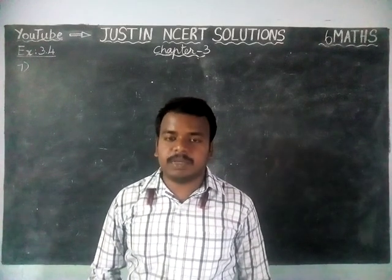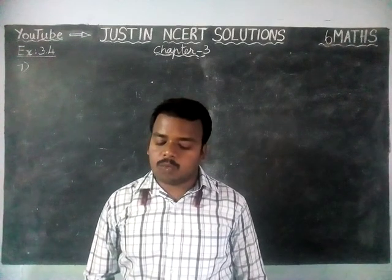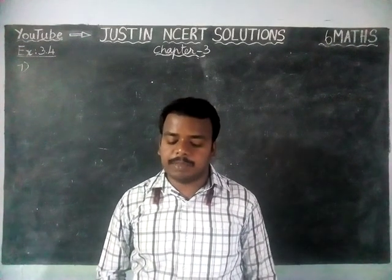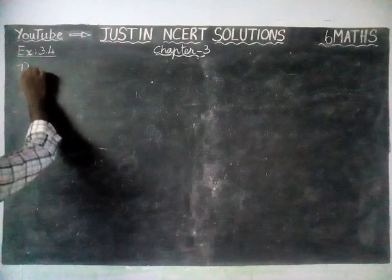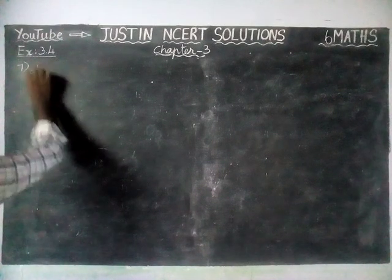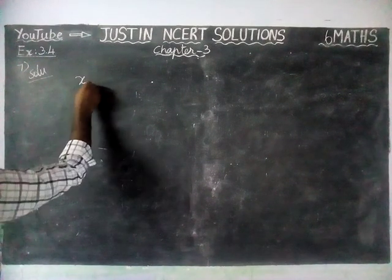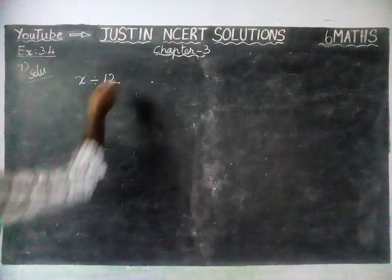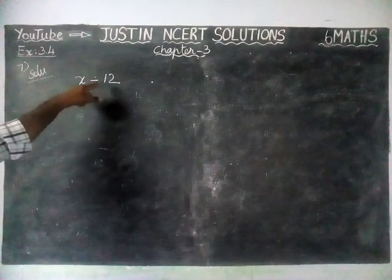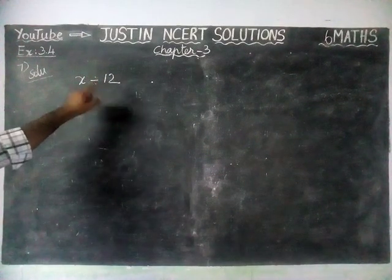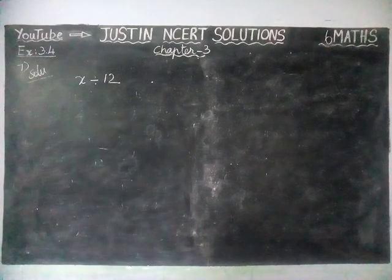The question is: a number is divisible by 12 — by what other numbers will that number be divisible? A number X is divisible by 12. By what other numbers is that number divisible?